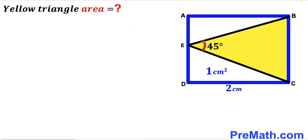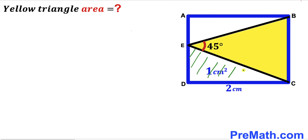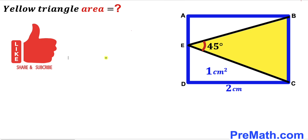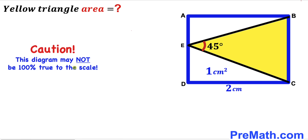Welcome to pre-math. In this video we have got this yellow shaded triangle BEC fully confined in this blue rectangle ABCD, as you can see in this given diagram, such that angle BEC is 45 degrees. Moreover, the area of right triangle CDE has been given to us as 1 centimeter square and the side length CD is 2 centimeters. Our task is to calculate the area of this yellow shaded triangle BEC. Please keep in mind that this figure may not be 100% true to the scale.